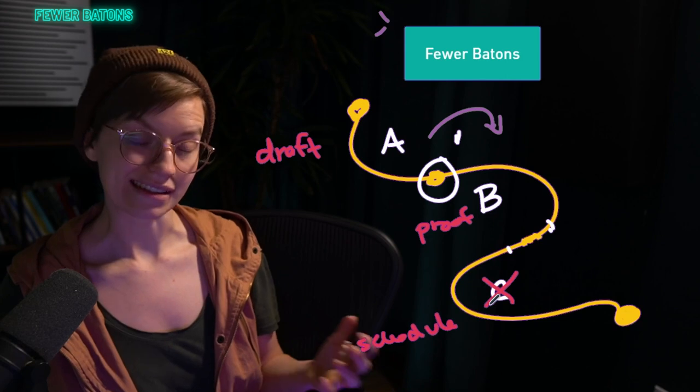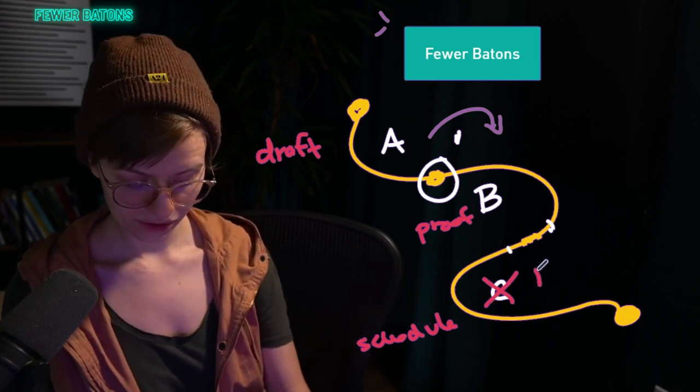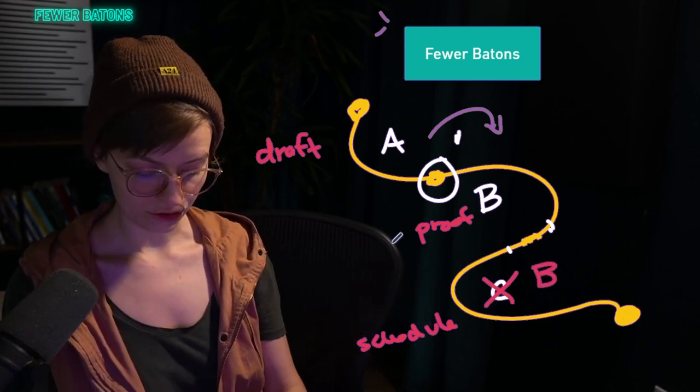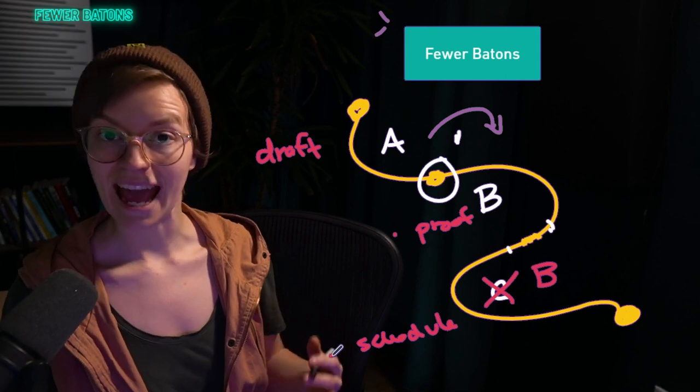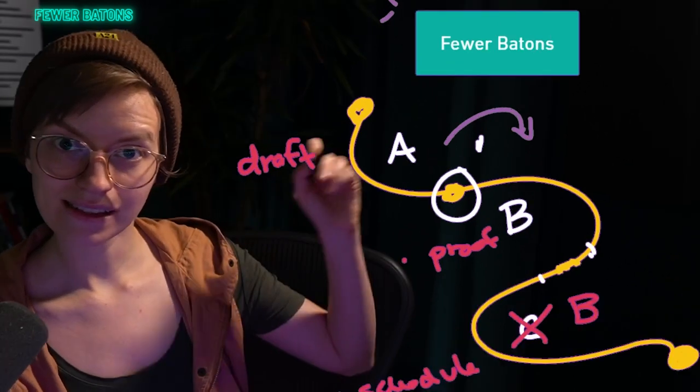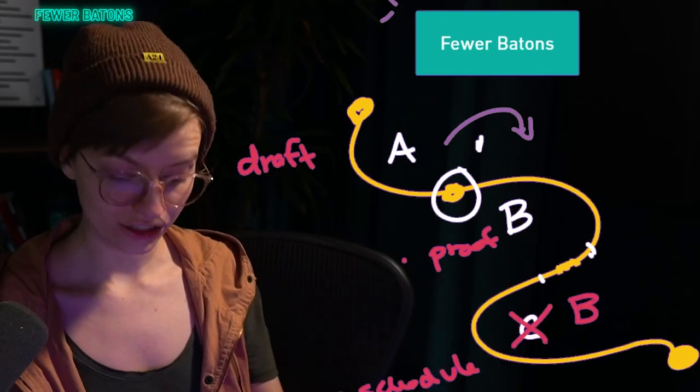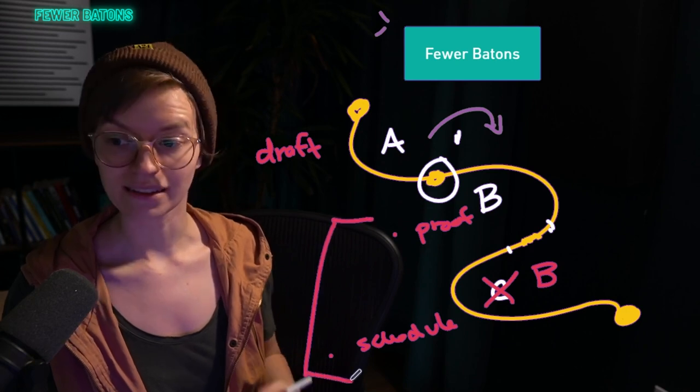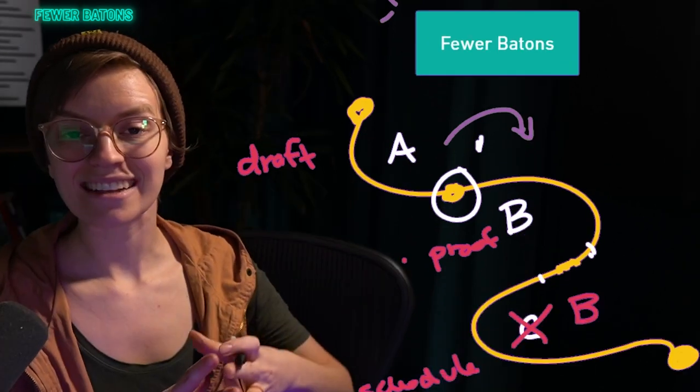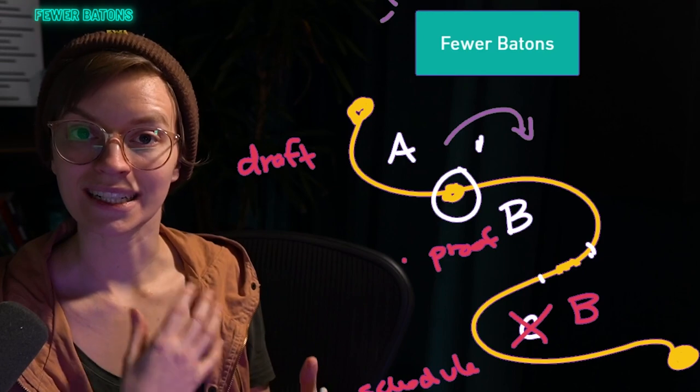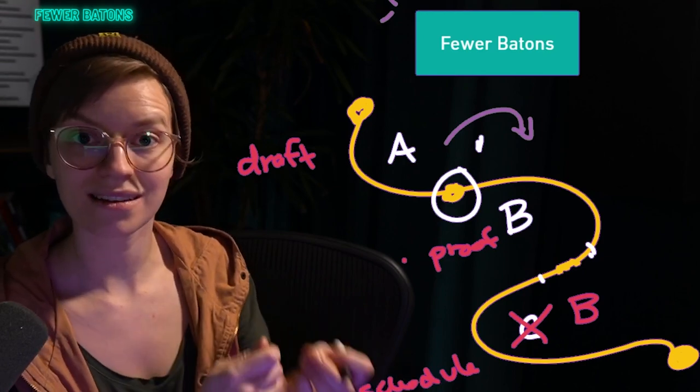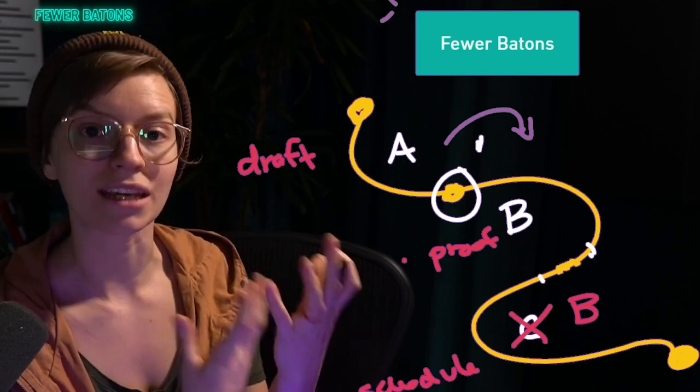So in this case, rather than a person C doing the scheduling of the post, we instead have person B do both the proofing and the scheduling at the same time. This feeds into the same strategy I talked about before of batching, because technically now these two things can be done at the same time, but it has an additional benefit of also not needing to have communication happen because it's the same person involved in both steps.